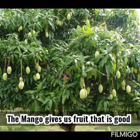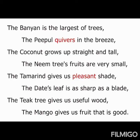Children, do you understand the poem? It is very easy to understand. I will read it again: the banyan is the largest of trees. The peepal quivers in the breeze. The coconut grows up straight and tall. The neem tree's fruits are very small. The tamarind gives us pleasant shade. The date's leaf is as sharp as a blade. The teak tree gives us useful wood. The mango gives us fruit that is good.